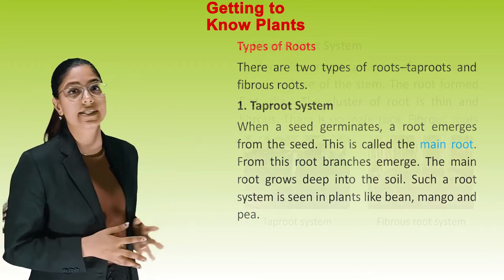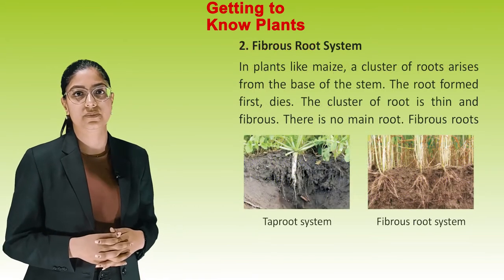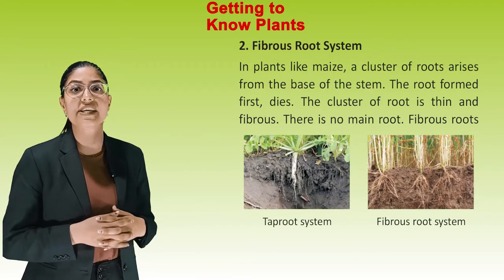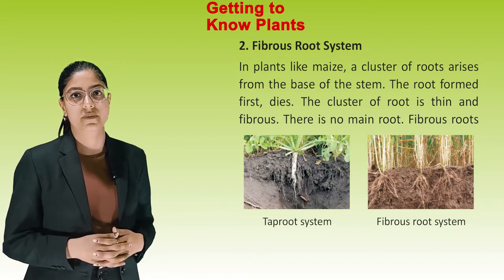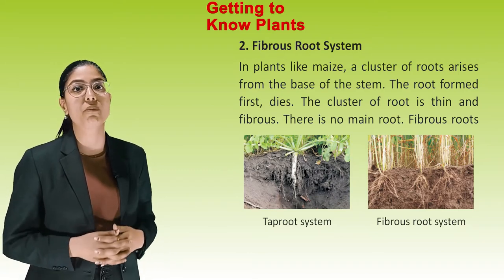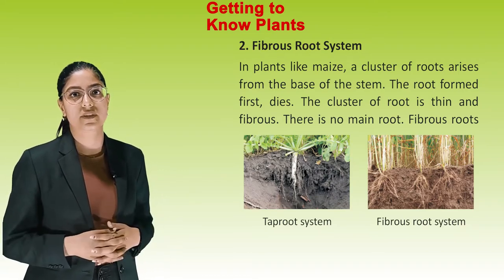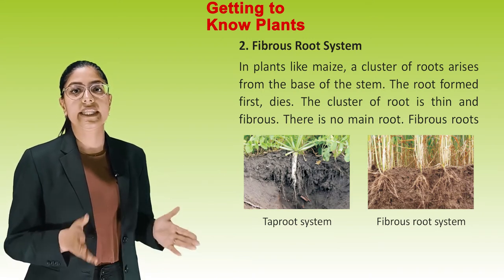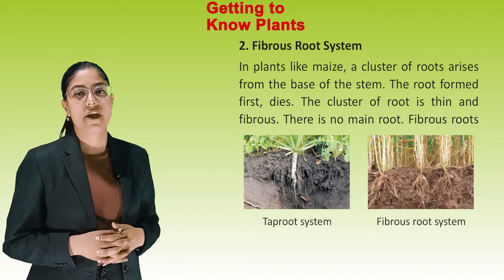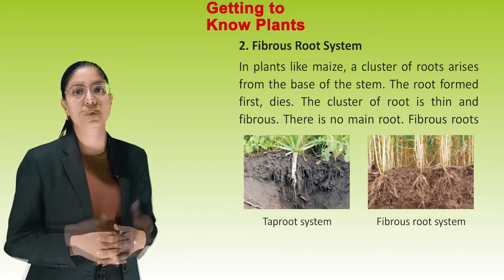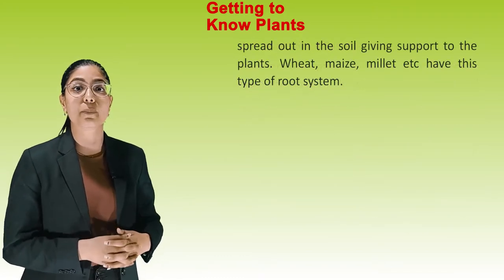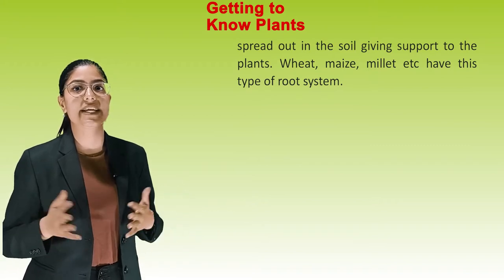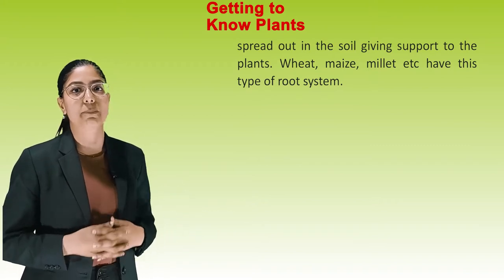Fibrous Root System — in plants like Maize, a cluster of roots arises from the base of the stem. The root formed first dies. The cluster of roots is thin and fibrous; there is no main root. Fibrous roots spread out in the soil giving support to the plant. Wheat, Maize, Millet etc. have this type of root system.